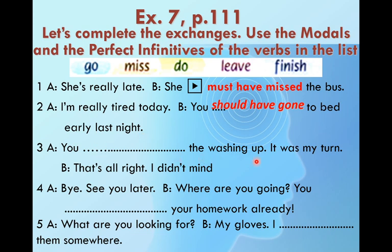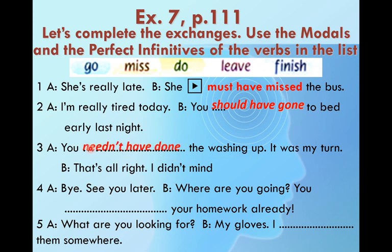You did the washing up — it was my turn, that's all right, I didn't mind. Washing up uses the verb 'do the washing up'. Since the person didn't need to wash up — it was the other person's turn — there's no necessity: you needn't have done the washing up. The modal is needn't, and done is in the third form.